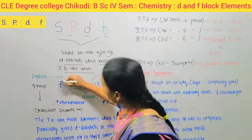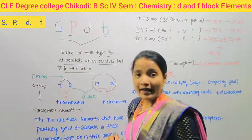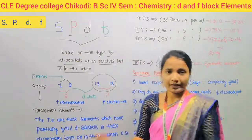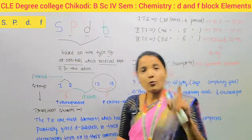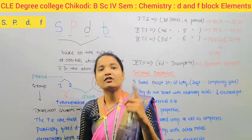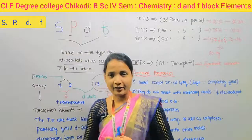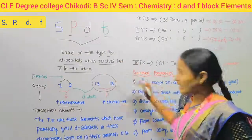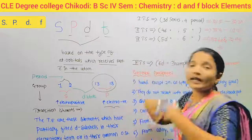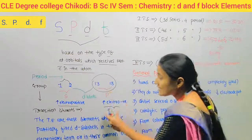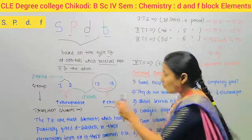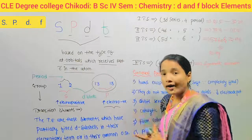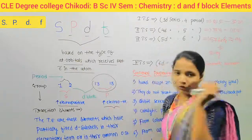Group 1 and group 2 have more electropositive character. Group 13 to group 18 have more electronegative character, or less electropositive character.